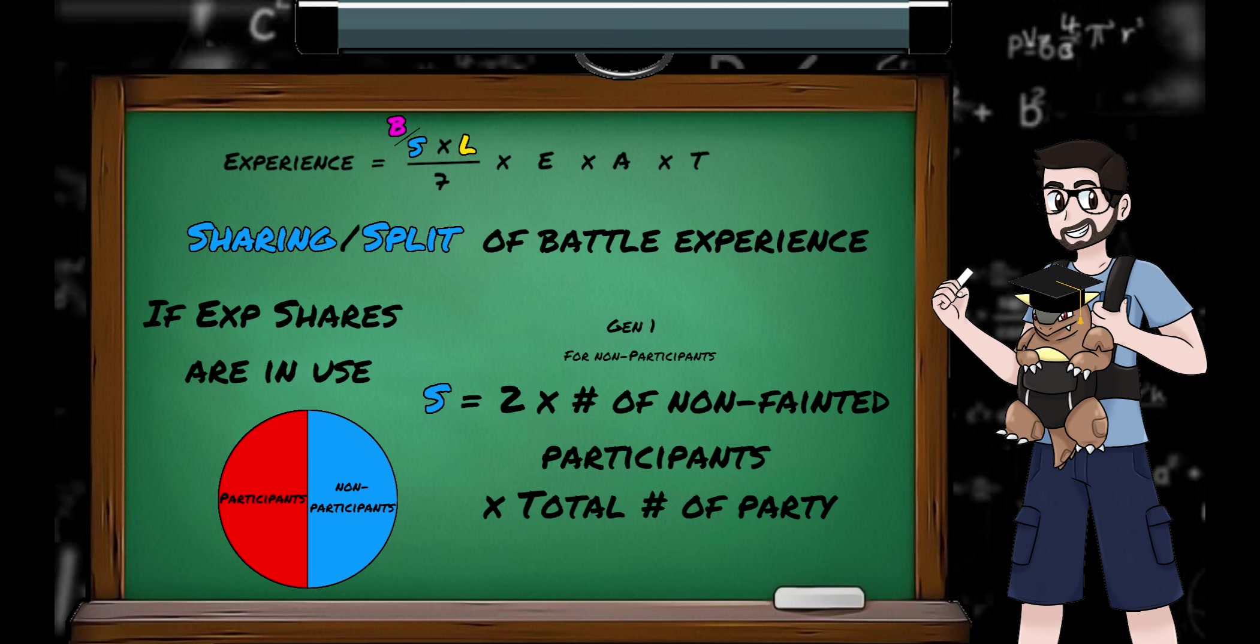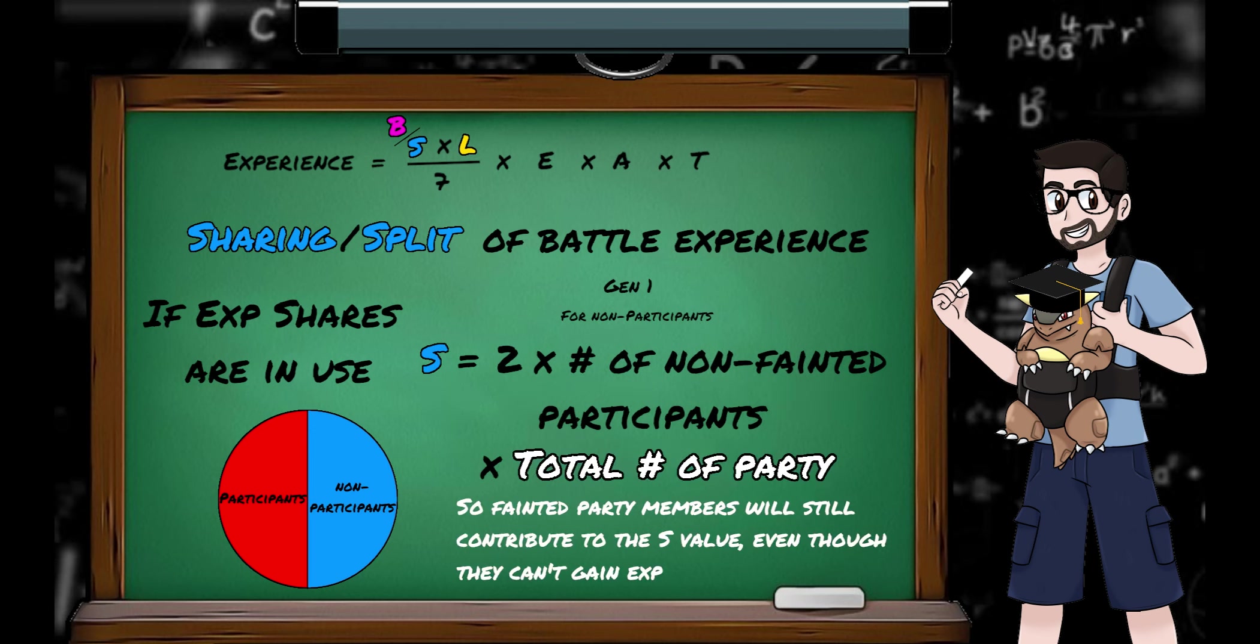For the non-participants, in generation 1, S is equal to twice the number of non-fainted participants multiplied by total number of Pokemon in the party. This sentence exposes two generation 1 bugs, or generation 1 features, who's to say. The fact that we multiply by total number of Pokemon in the party, instead of total non-fainted Pokemon in our party, means if you have fainted Pokemon in your team, the XP they would be getting from the XP all is lost to the ether.